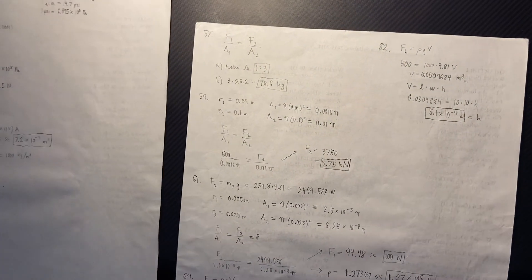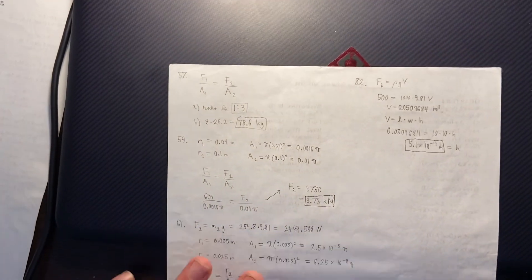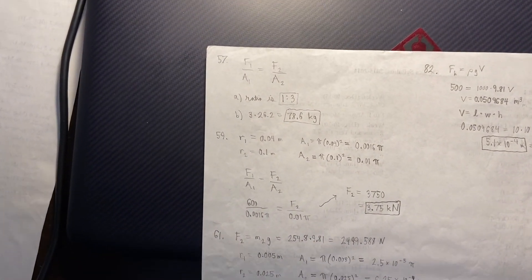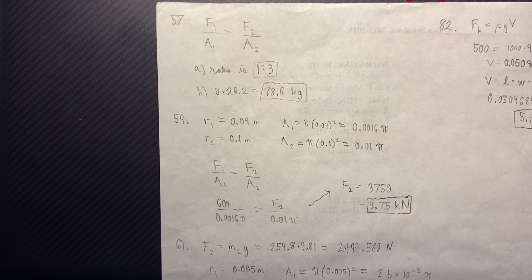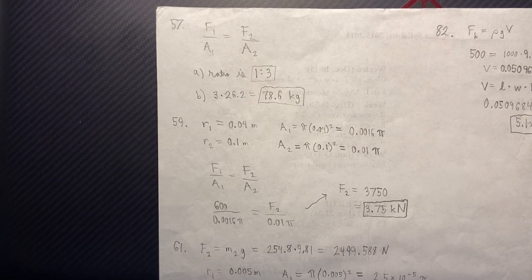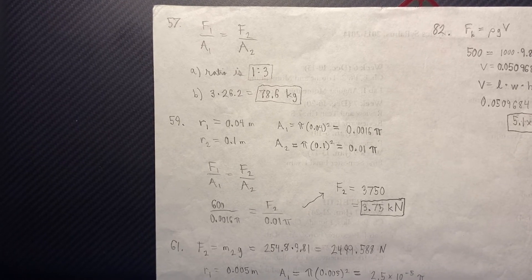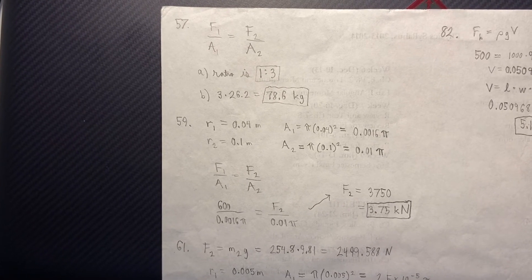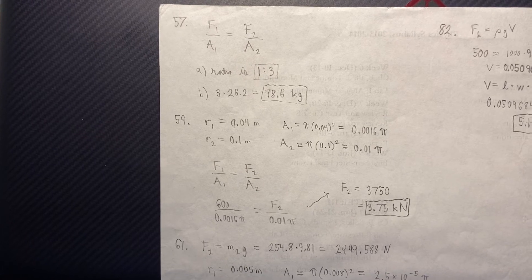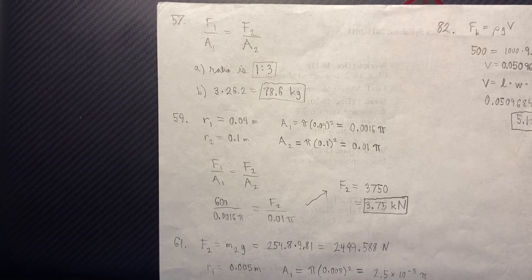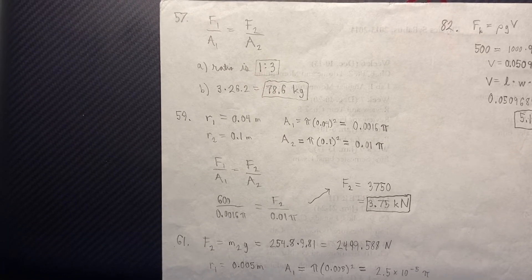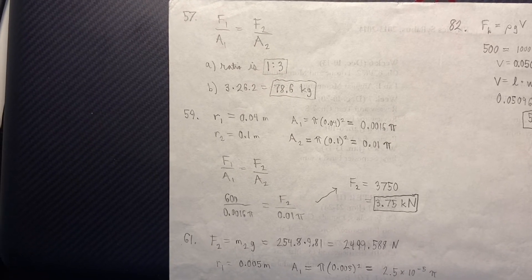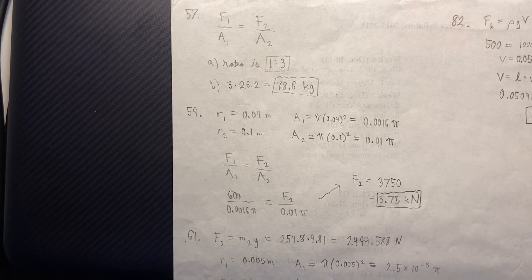Okay, so, let's go on to the next part of the problems. And we're going to have one that covers Pascal's principle. So, this just says that for a given pressure, the ratios of force and area are going to be equal. So, I've got F1 over A1 equals F2 over A2. The ratio is 1 to 3. I can get that from the givens. And 3 times 26.2 is 78.6 kilograms.